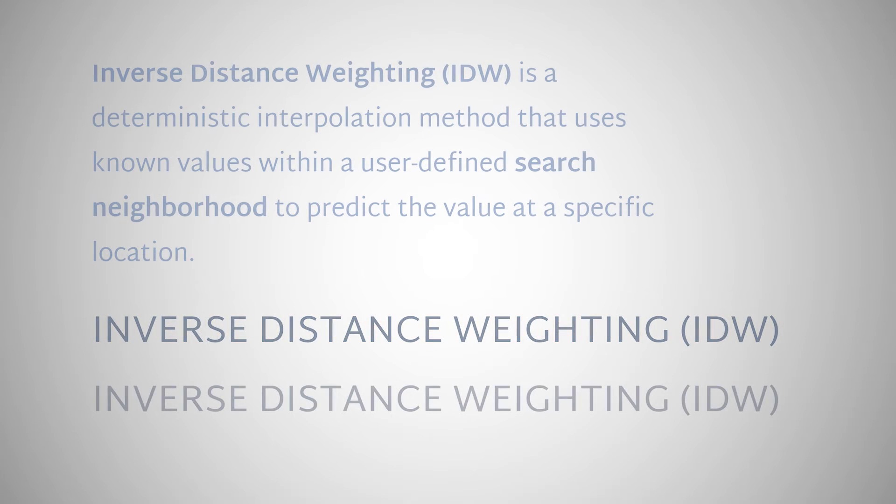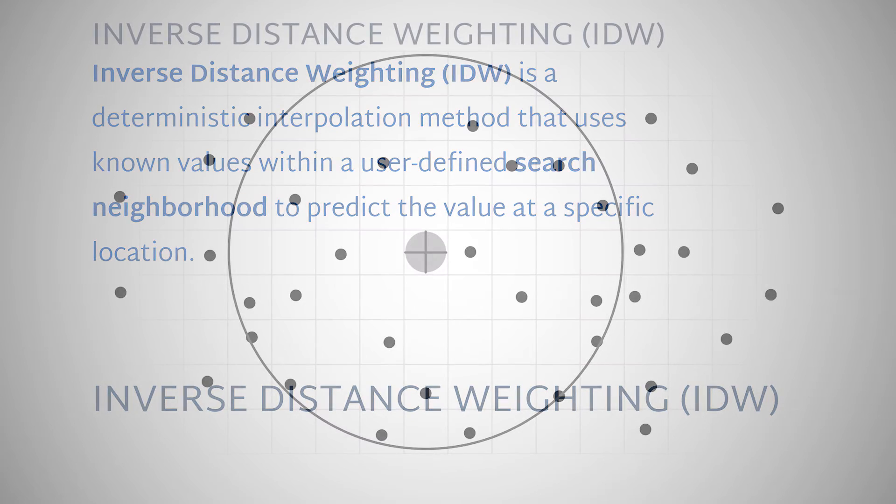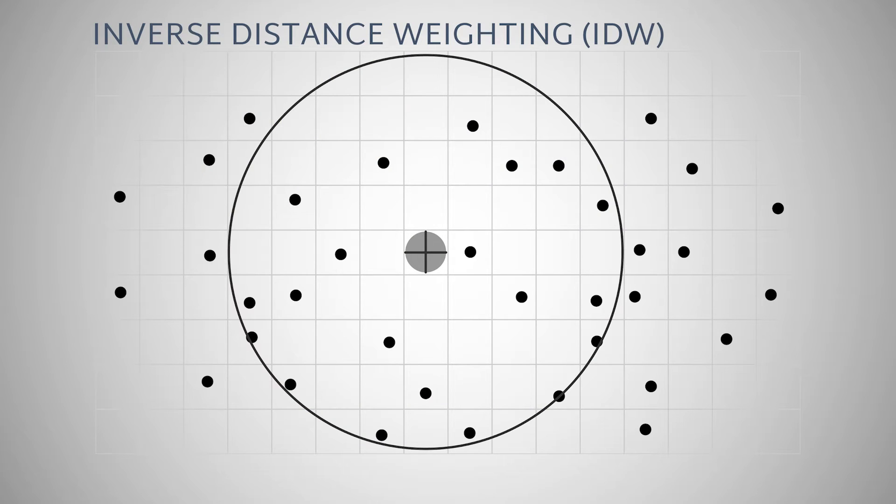Inverse Distance Weighting, or IDW, is a deterministic interpolation method that uses known values within a user-defined search neighborhood to predict the value at a specific location.